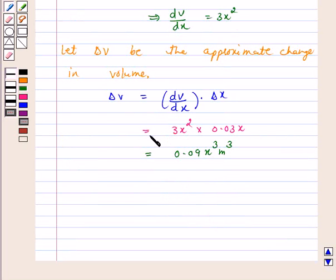Hence, the approximate change in the volume is 0.09x³ m³. This means option C is correct and this is the answer. I hope the question is clear to you. Bye and take care.